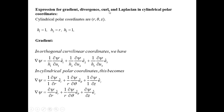Next, we find expressions for gradient, divergence, Laplacian, and curl in cylindrical polar coordinates. Using orthogonal curvilinear coordinates with scale factors h₁ = 1, h₂ = r, h₃ = 1 (i.e., h_r = 1, h_θ = r, h_z = 1), the gradient expression is: ∇ψ = (1/h₁)(∂ψ/∂u₁)ê₁ + (1/h₂)(∂ψ/∂u₂)ê₂ + (1/h₃)(∂ψ/∂u₃)ê₃.